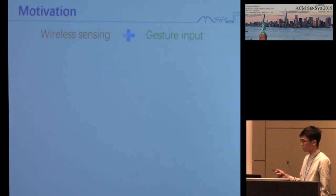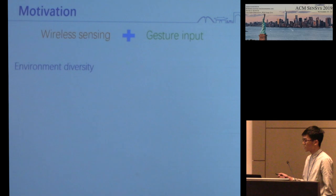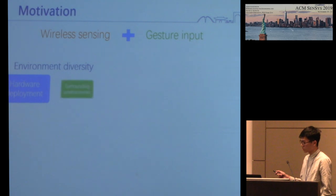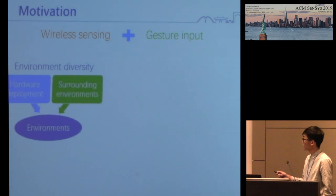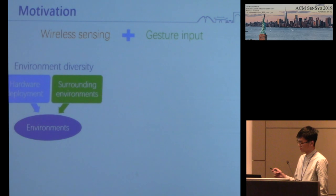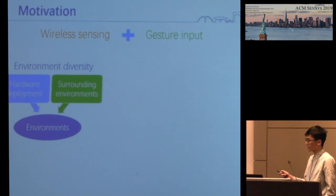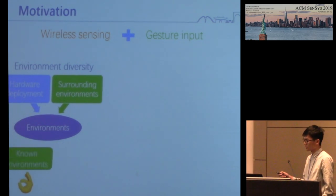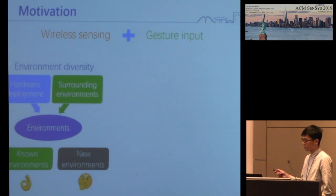They all have their own limitations such as privacy and battery limitations. When wireless sensing meets gesture input, there are some unavoidable challenges to be solved. The first is the strict requirement of the environment in wireless sensing. The wireless signal propagation path is determined by the relative position of the hardware deployment as well as the surrounding environment. The system may work well in some known environments but degrades significantly when deployed in a new place.